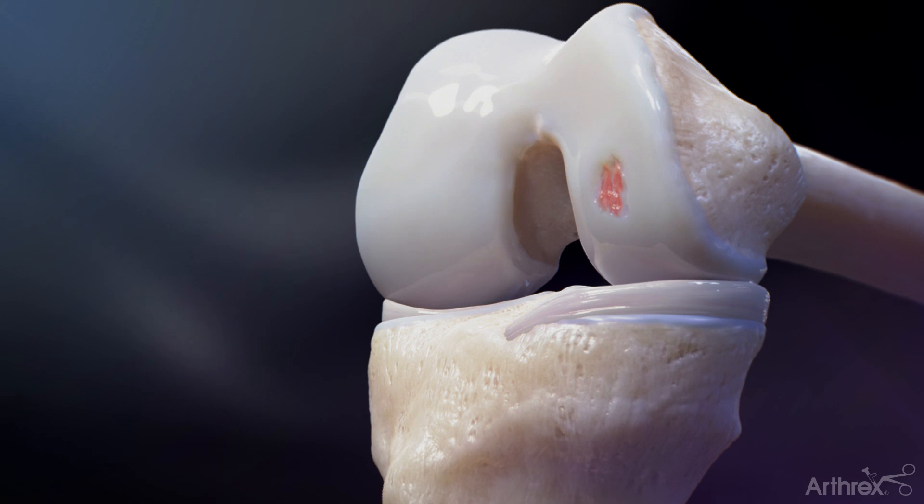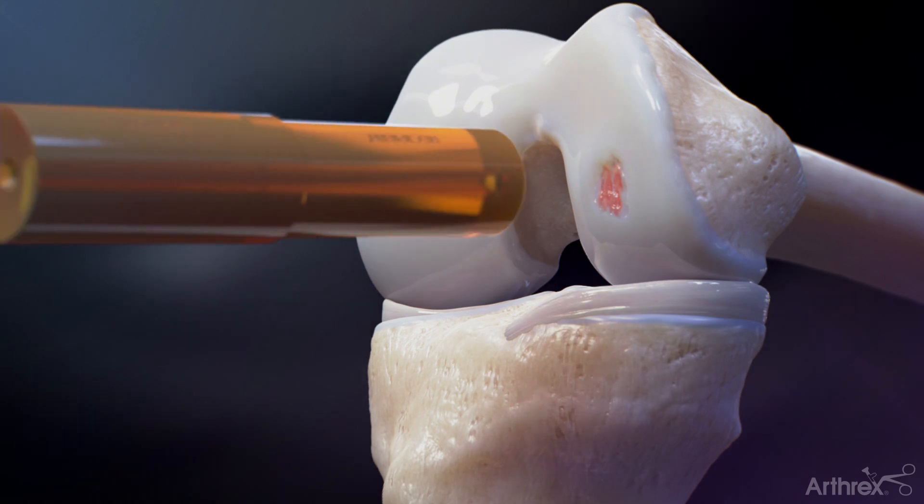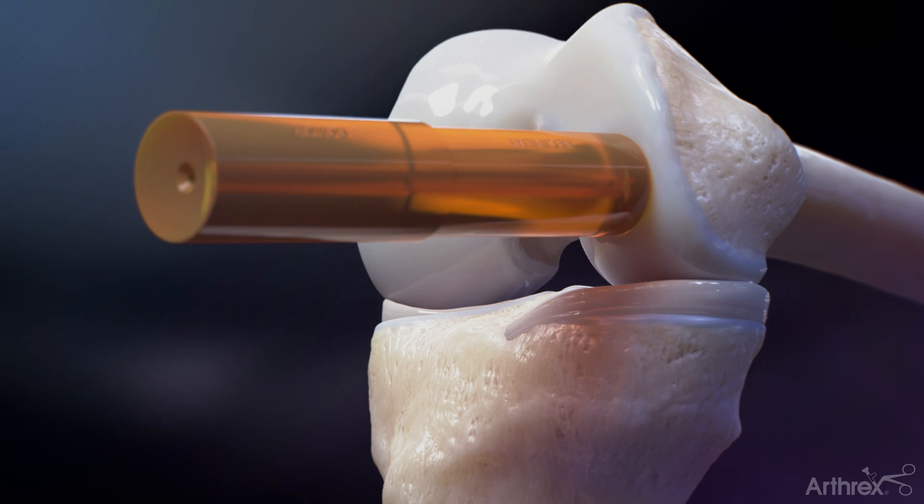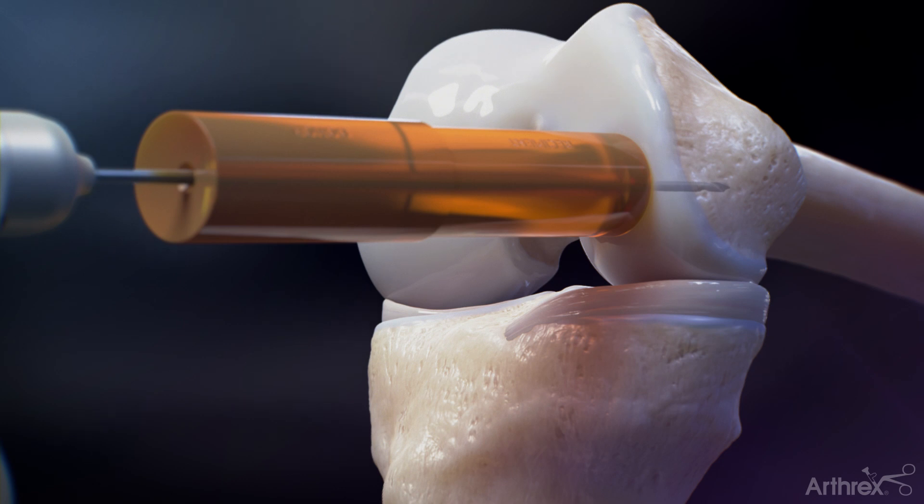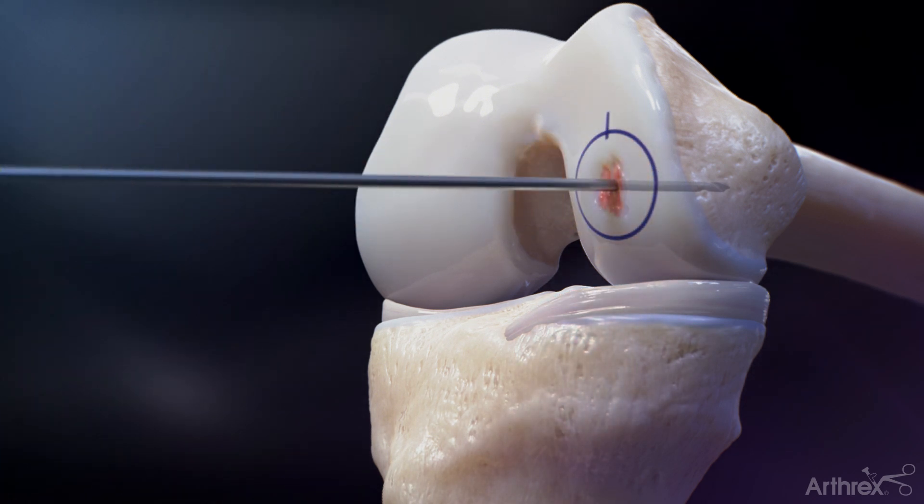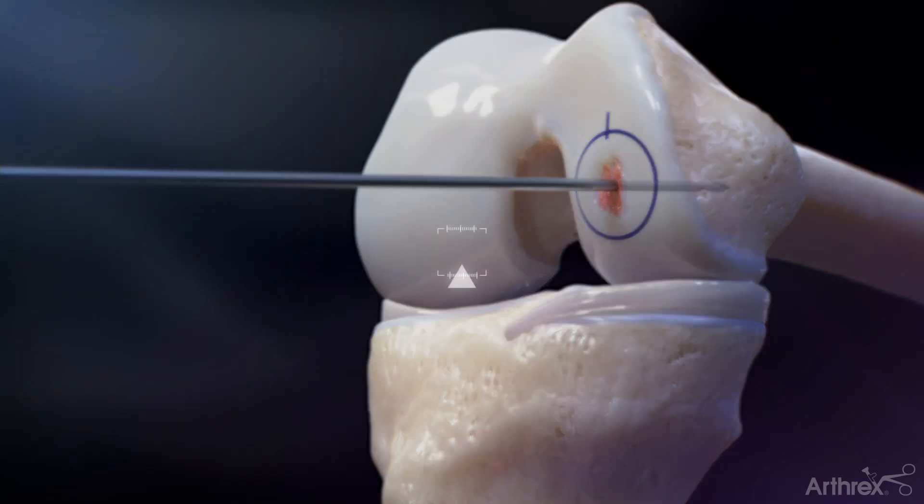Once the appropriate size match has been confirmed, return to the recipient site and place the sizer over the defect, staying perpendicular to the condyle surface. Advance a drill tip guide pin through the sizer into bone. Create a circumferential mark around the cylinder. Remove the sizer and place a reference mark in a superior 12 o'clock position.